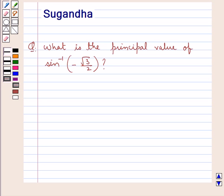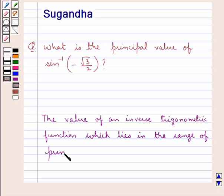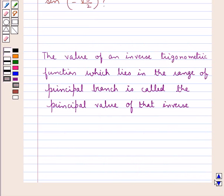Before moving on to the solution, let's discuss the definition of the principal value of an inverse trigonometric function. The value of an inverse trigonometric function which lies in the range of the principal branch is called the principal value of that inverse trigonometric function.